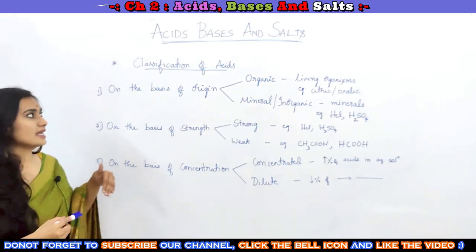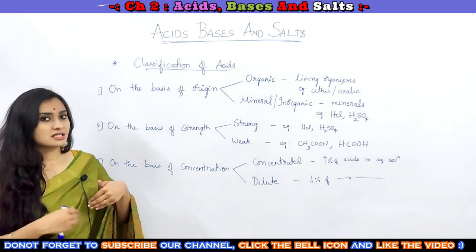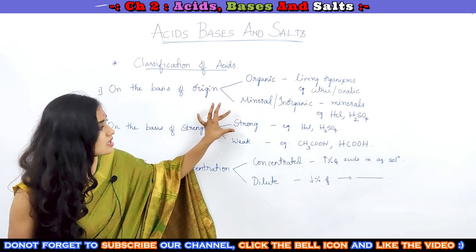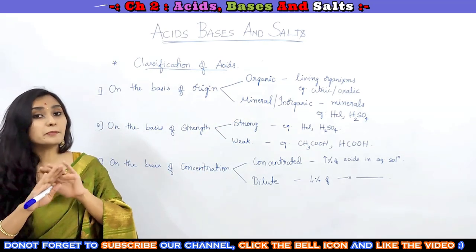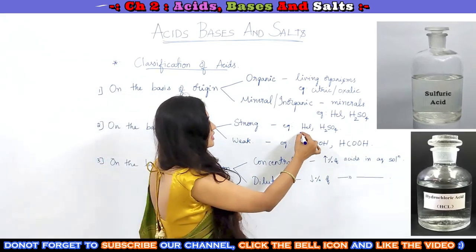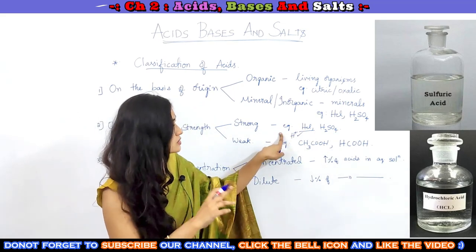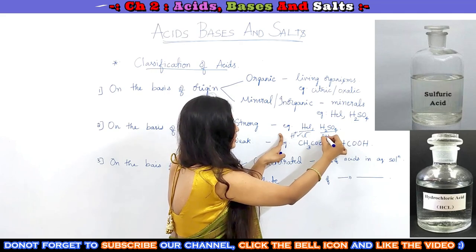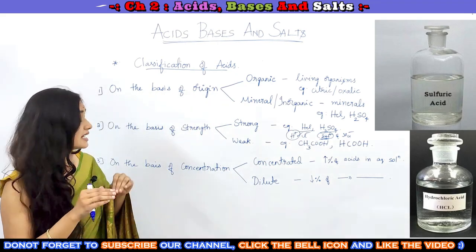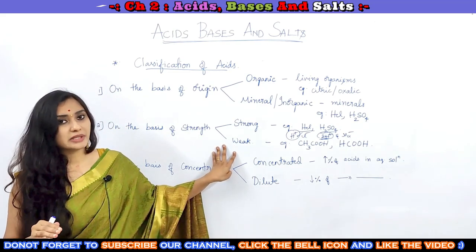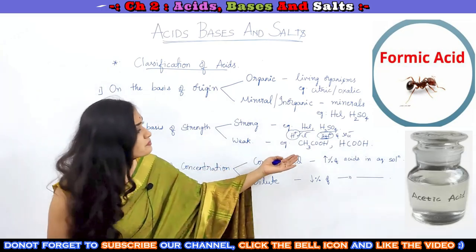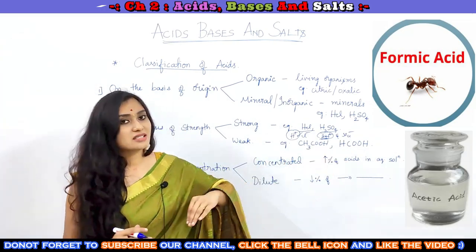On the basis of strength, we have classified acids into two types: strong acids and weak acids. Strong acids are those which will dissociate completely to produce H+ ions when dissolved in water. For example, HCl and H2SO4. When HCl dissolves in water, it dissociates into H+ and Cl-. H2SO4 dissociates into 2H+ and SO4²- ions. You can see they are dissociating completely. Whereas in the case of weak acids, they will not dissociate completely — they partially dissociate in aqueous medium. For example, acetic acid or formic acid — these are all weak acids.